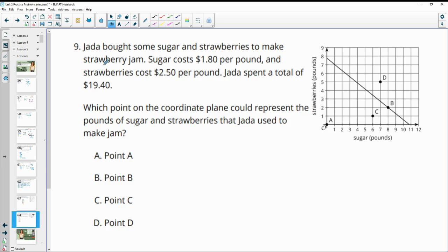Number nine, Jada bought some sugar and strawberries to make strawberry jam. Sugar costs $1.80 a pound and strawberries cost $2.50 a pound. Jada spent $19.40. Which point on the coordinate plane could represent the pounds of sugar and strawberries that Jada used to make jam? So we want the one that would be the solution to this. So that would be B, the one that is on the line.